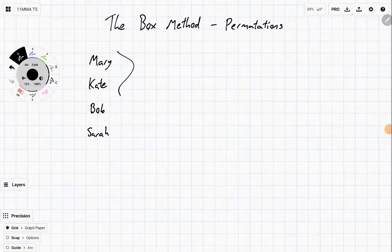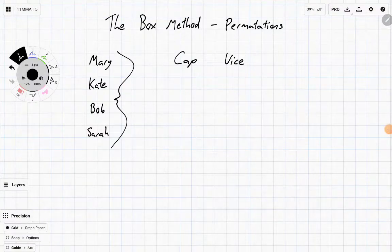Well let's imagine we've got four people and I want to choose two of them. One to be the captain and one to be the vice. How many different ways could I do it?